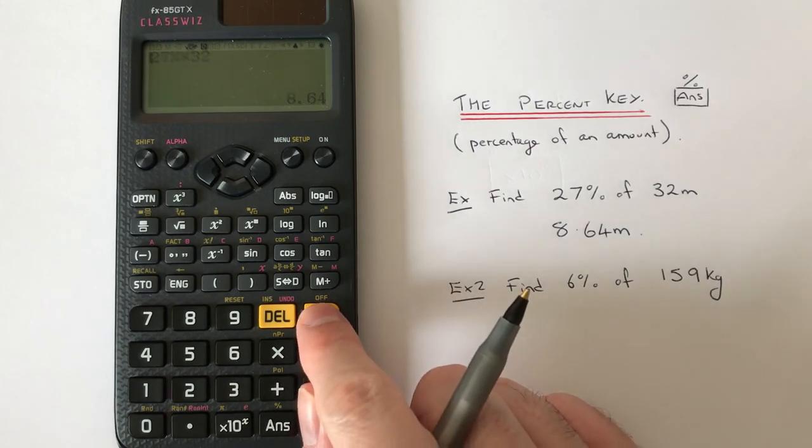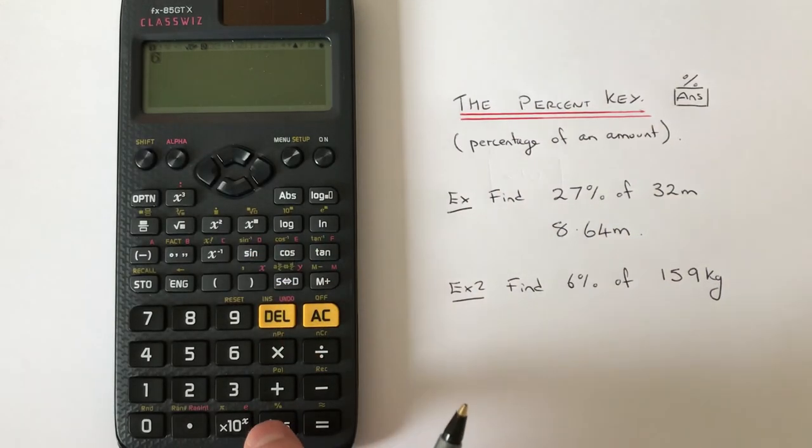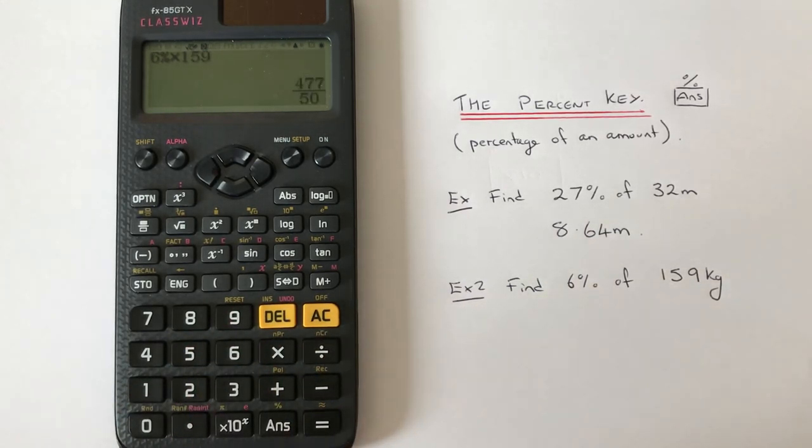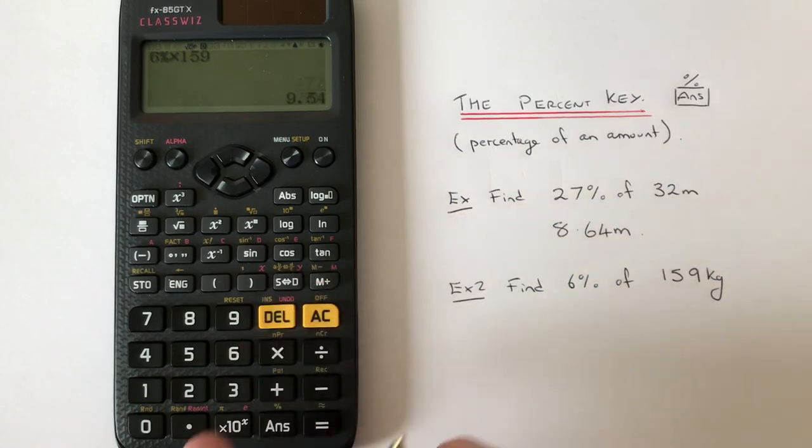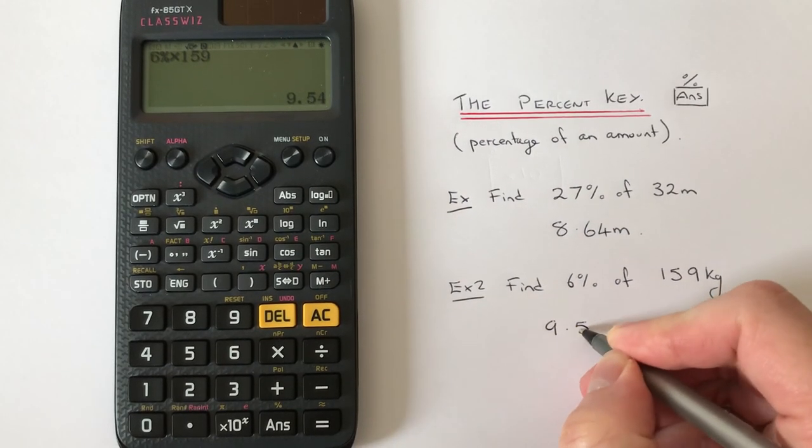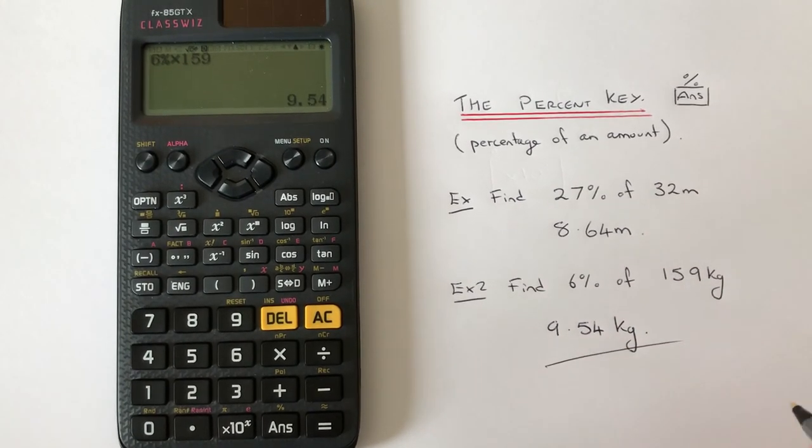We press 6, Shift, Ans, then press times for 'of', and then type in our number. Press equals and S⇔D for the answer. We get 9.54 kilograms. Thanks for watching guys, see you next time.